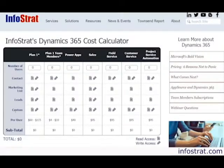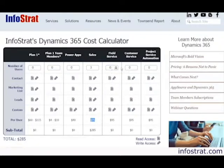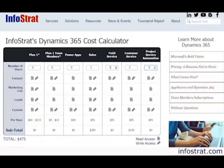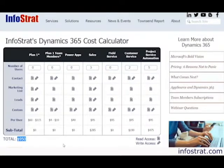Let's start with an example from a small company. This company has three salespeople, so I'm going to enter three for Dynamics 365 Sales — those are $95 each. Then let's say there are two customer service reps, also $95 each, and five people who manage projects, so let's get them Project Service Automation, also $95 each. We've now got a total of $950 for that company.